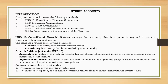The investor is exposed to or has rights to variable returns from its involvement with the investee. By returns, dividends would be an example. Those returns should be variable. For instance, preference shareholders are entitled to dividends, but those dividends are not variable. That's why we say the investor must be exposed to or have rights to variable returns. This word 'variable' is important — you should be able to vary them yourself to be the controller of a subsidiary.